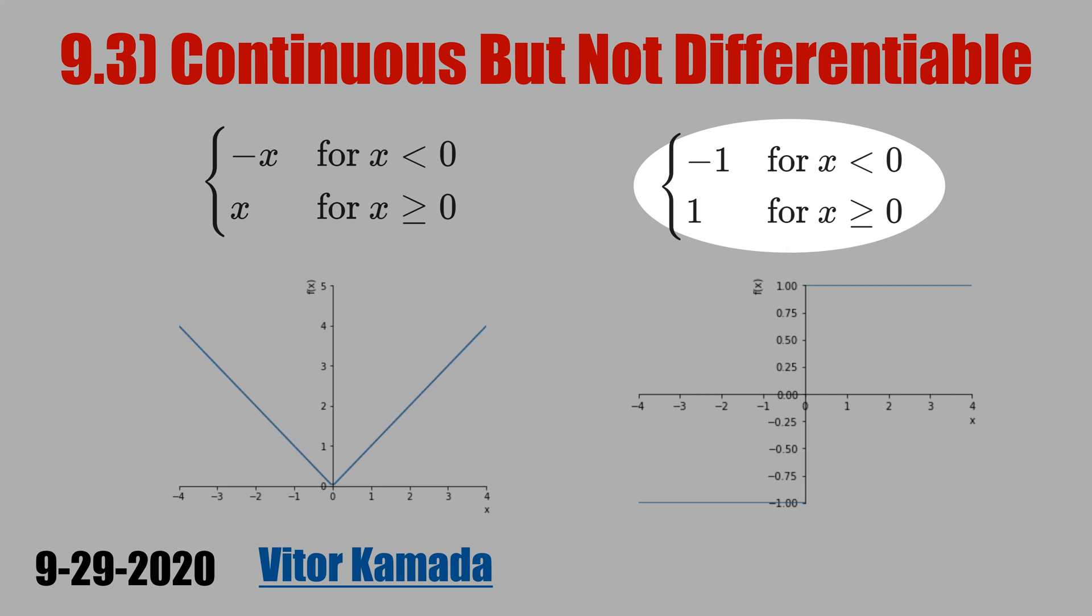Now, let's see the chart of these piecewise functions. For x above zero, this is the derivative, equal one, as a constant. And for x below zero, this is the derivative, minus one, as a constant as well.